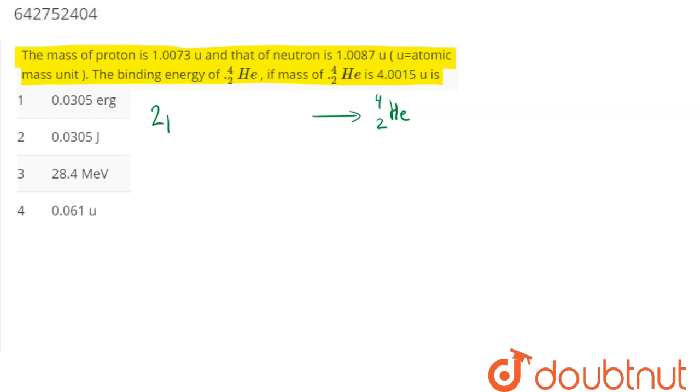two protons and two neutrons. So we can say two protons means ₁¹p and neutron means ₁⁰n.